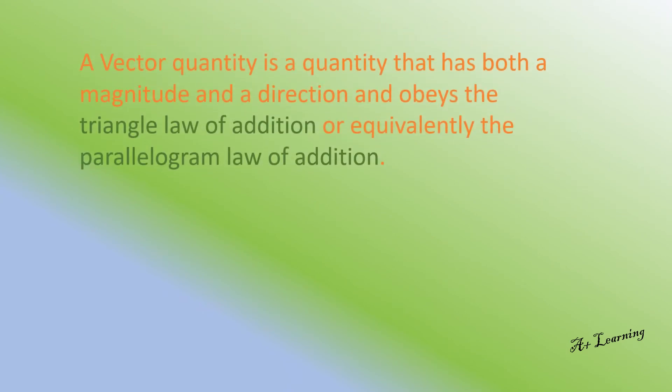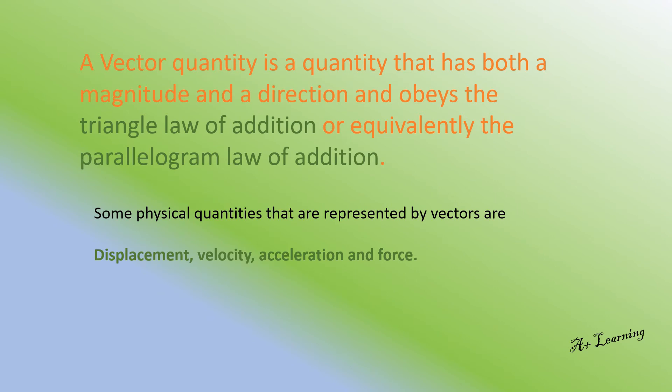Now let us see what is a vector quantity. A vector quantity is any quantity that has magnitude and direction, such as displacement or velocity. Vector quantities are represented by mathematical objects called vectors. Geometrically, vectors are represented by arrows with the end marked by an arrowhead. This obeys the triangle law of addition, or equivalently the parallelogram law of addition, which we will be seeing in future videos.